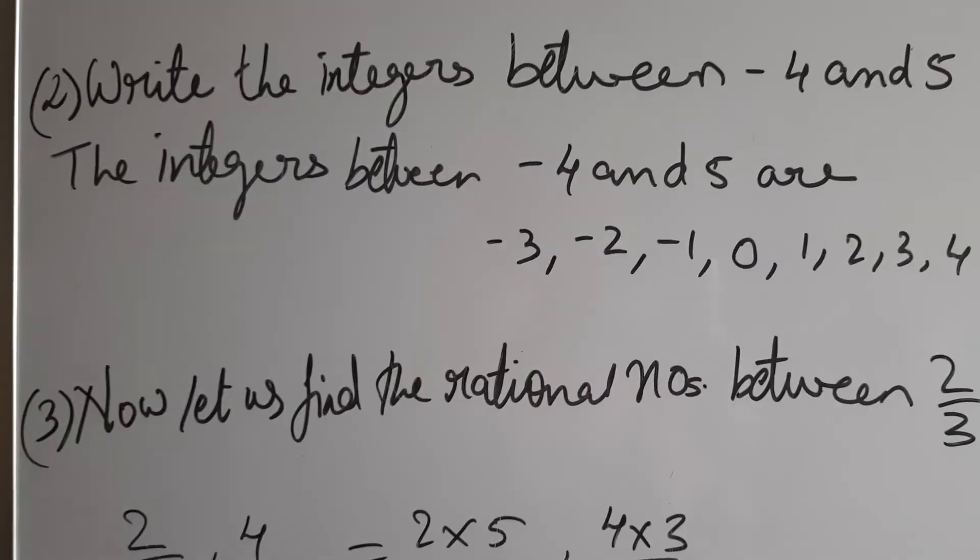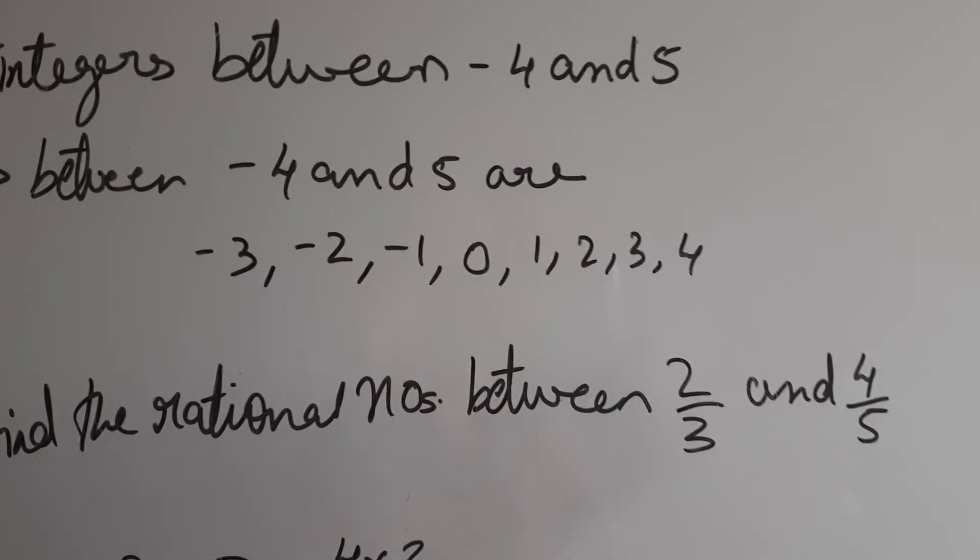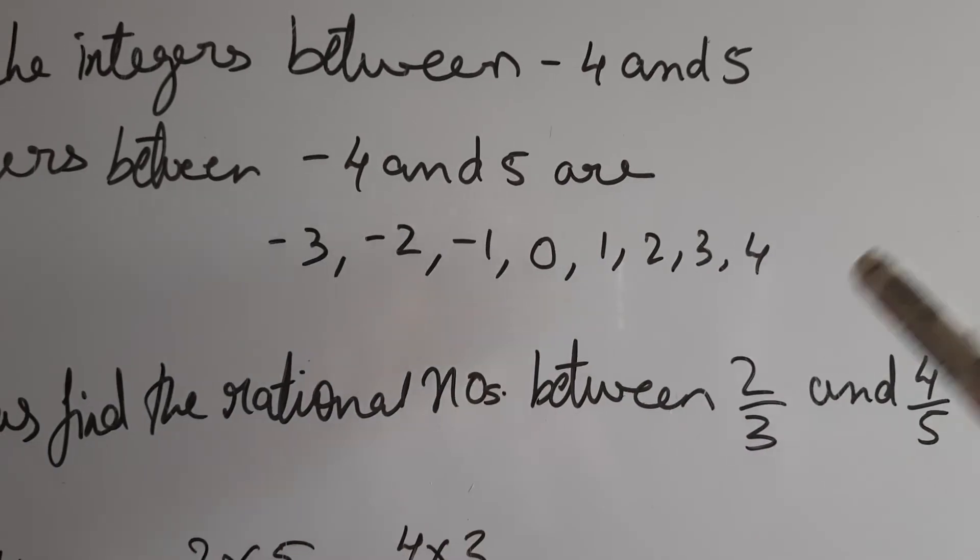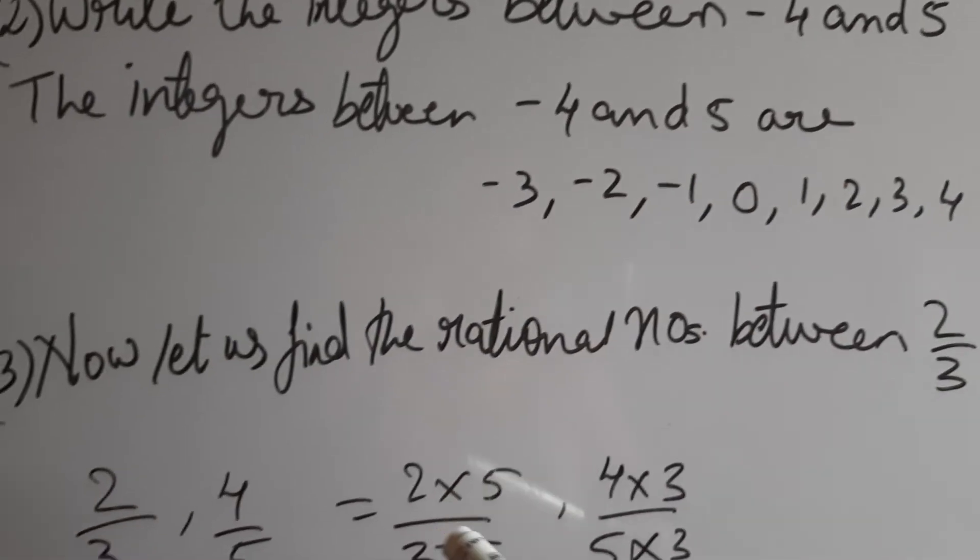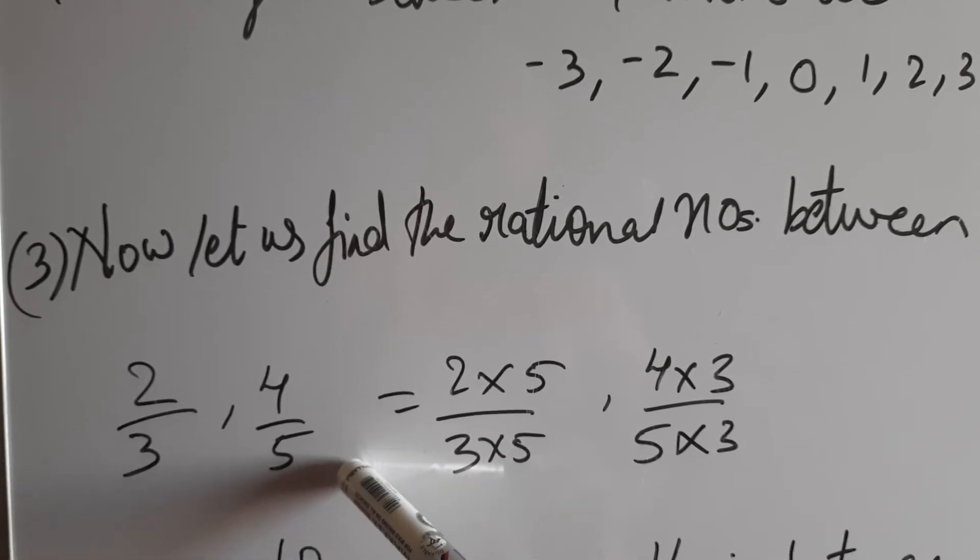Next, now let us find the rational numbers between 2 upon 3 and 4 upon 5. Now this is a fraction, children. 2 upon 3 and 4 upon 5. So we need to use a method. One method is that we use cross multiply. 3 and 5 are different denominators.